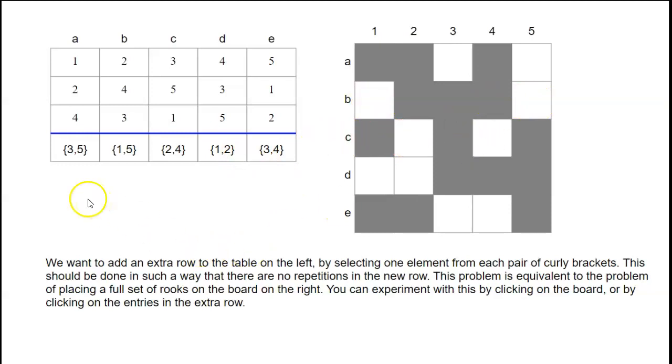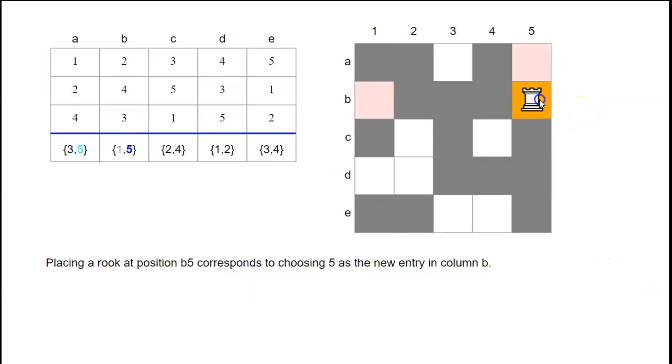And so we can perform the job allocation by placing rooks here, like if we place a rook at B5, saying we're going to give job B to student 5, so we mark the 5 here. And now we used to have a 5 here, saying that 5 was available for job A, but they're no longer available, because 5 is doing job B. So only student 3 is available for job A, so we'd better assign student 3 to job A like that.